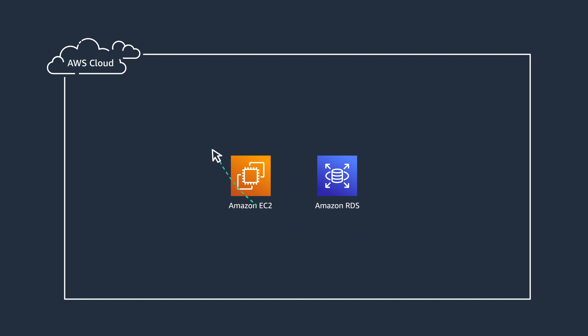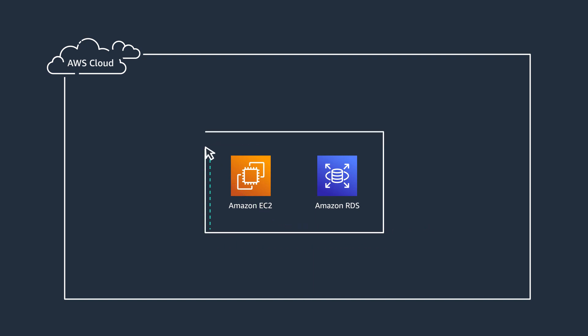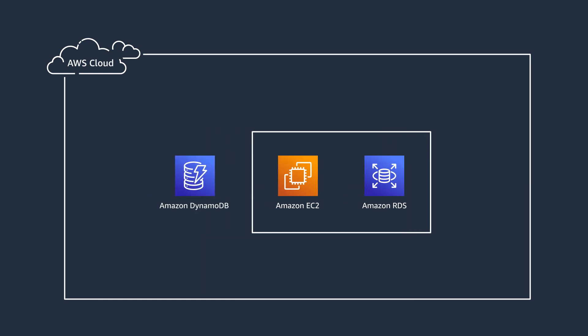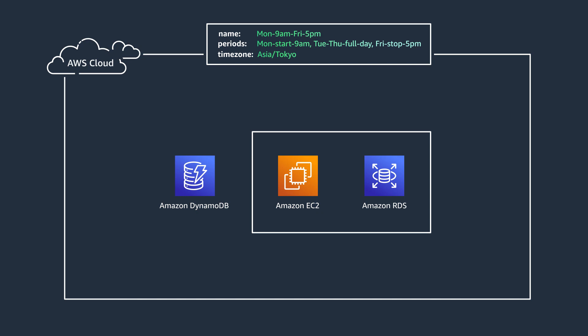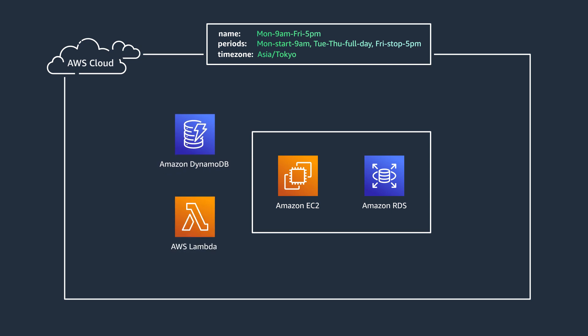You first define a tag key to identify applicable Amazon EC2 and Amazon RDS instances. You then define an Amazon DynamoDB table that contains the schedule information — for example, a schedule for Monday to Friday, 9 a.m. to 5 p.m. AWS Lambda, which is an event-driven serverless compute platform, will retrieve the schedule defined in the Amazon DynamoDB table and perform the appropriate action of stopping or starting the instances.